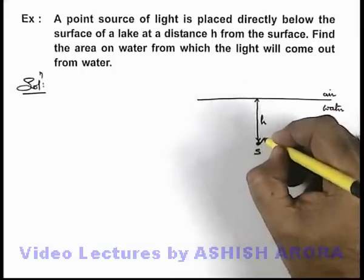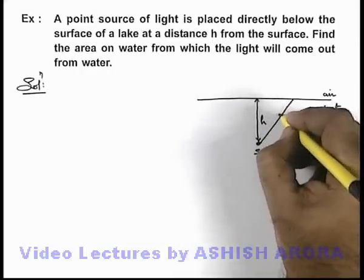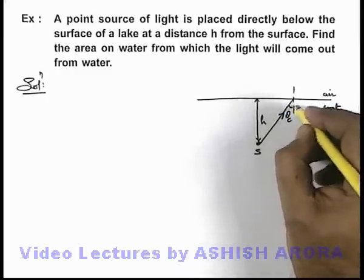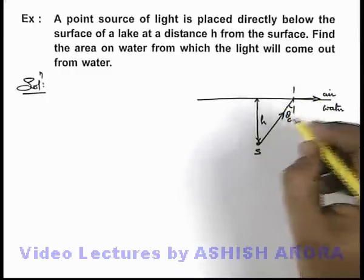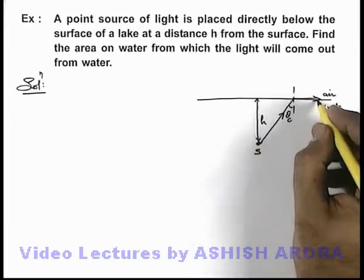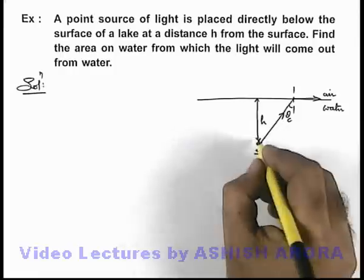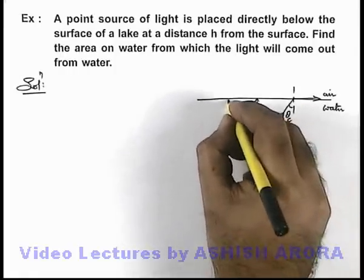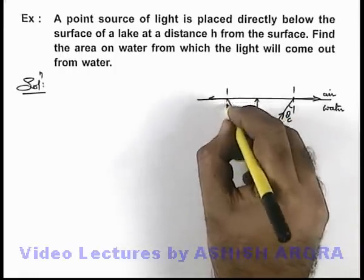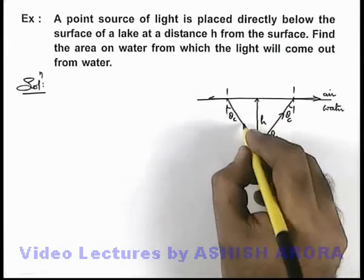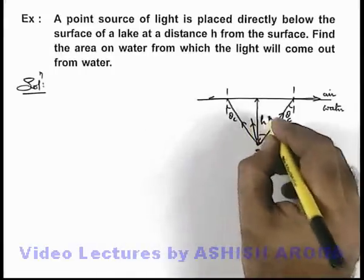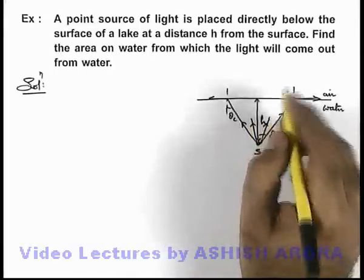Now all those light rays from the source which will incident on the surface at the critical angle value, these will be grazing, and all those light rays which are going outside will be internally reflected. That means if we consider a cone of half angle theta c, then all those light rays which are there within this conical region of half angle theta c will be coming out from the surface of water.